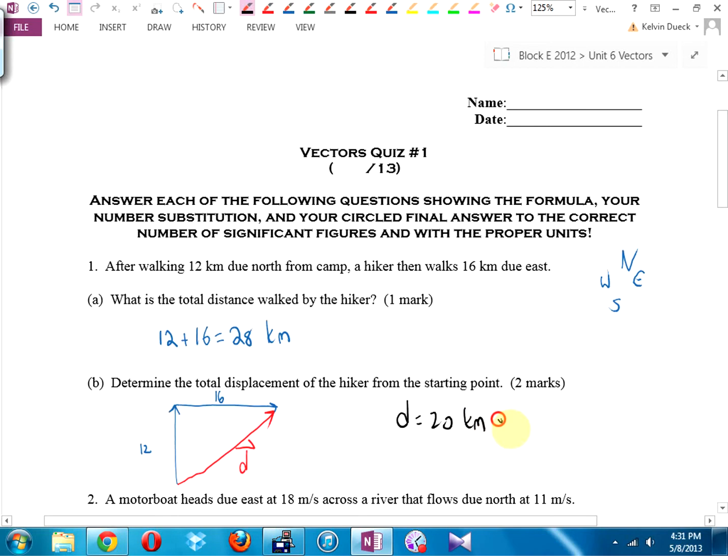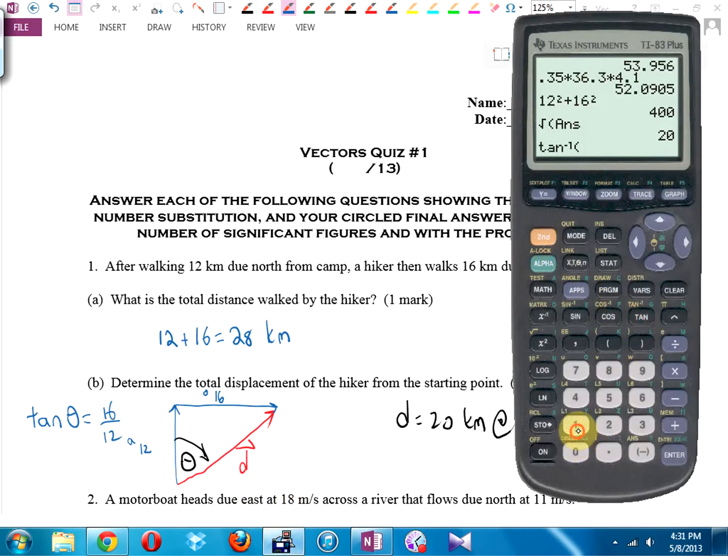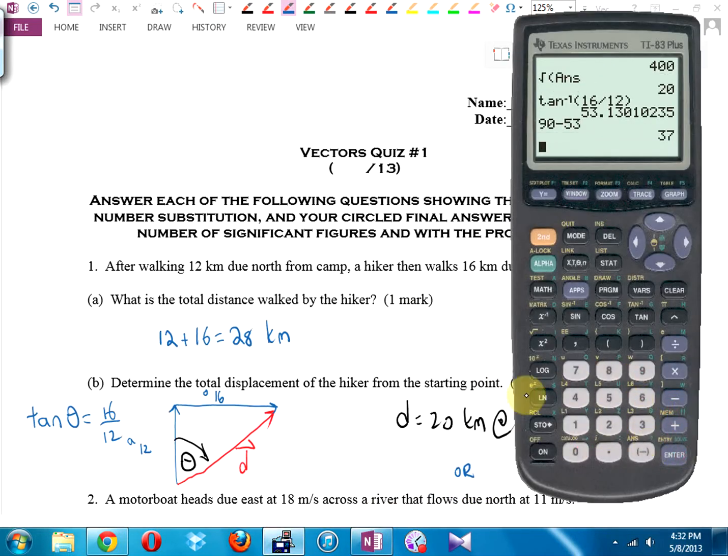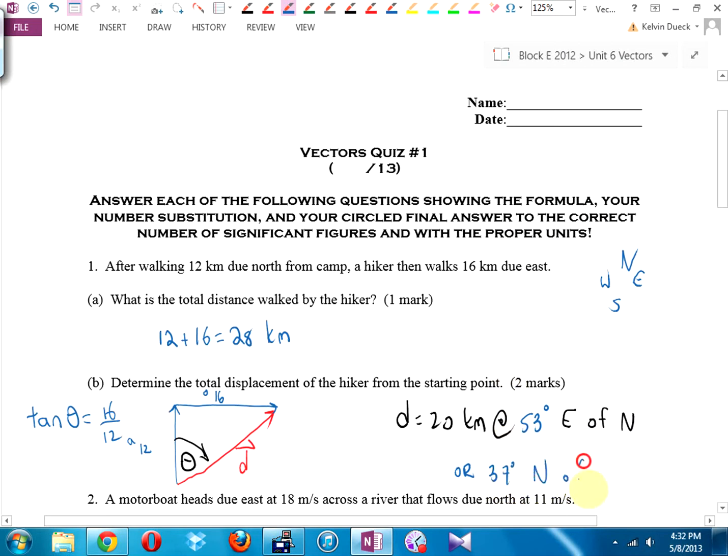That gets you one mark and then we need a direction. I'm going to find this angle here. By the way, that angle there is going to be east of north. Let's see. This is opposite. This is adjacent. It's going to be tangent of theta equals opposite over adjacent. 53 degrees east of north or 37 degrees north of east. One mark for the magnitude, 20. Half mark for the degrees, 53. Half mark for the east of north or half mark for the degrees, 37. Half mark for the north of east.